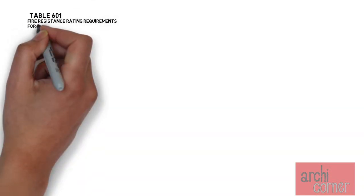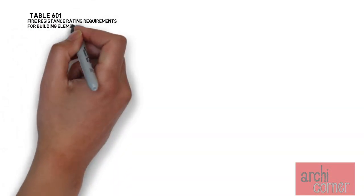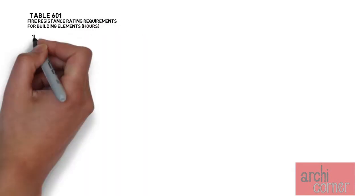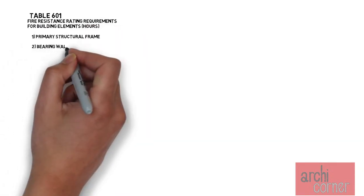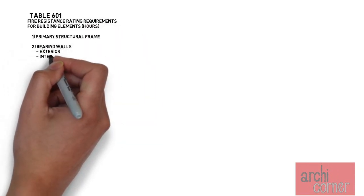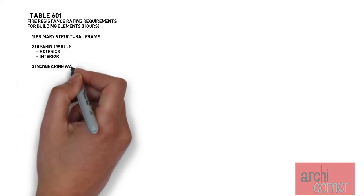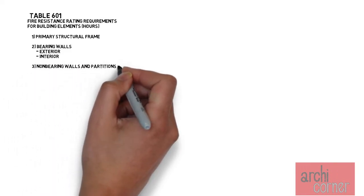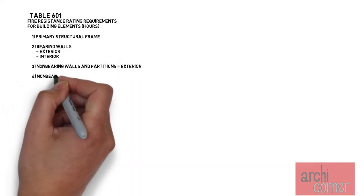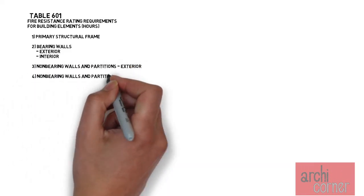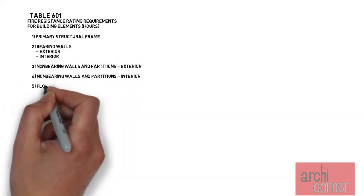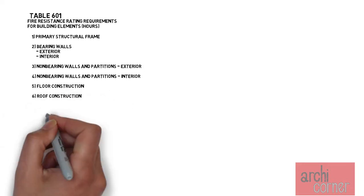Table 601 shows the requirements for six key building elements: primary structural frame, bearing walls, non-bearing walls and partitions both for exterior and interior applications, floor construction, and roof construction.